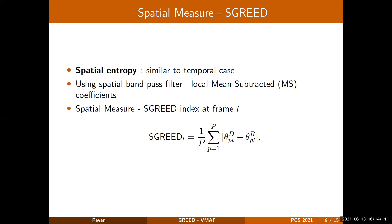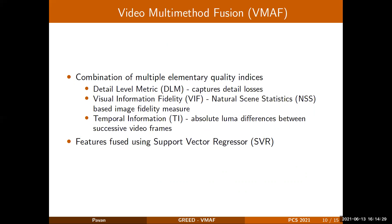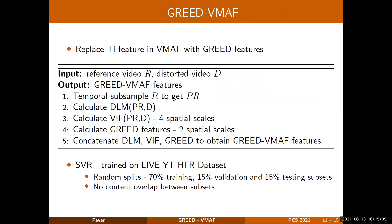Since the spatial bandpass filtering is done at each frame, there is no bias due to frame rate, and spatial GREED is just the absolute difference between the reference and the distorted. This concludes the discussion on GREED. Next, I'll discuss the video multi-method fusion, VMAF. VMAF is a combination of multiple elementary quality indices. It includes a detail level metric which captures detail losses, and visual information fidelity, which measures image fidelity based on natural scene statistics. Since this is a video model, it also has temporal information to capture the temporal component, which is just a luma difference between successive video frames. These features are then fed to a support vector regressor to map video features to quality. The proposed model, which we term as GREED-VMAF, replaces the temporal information feature present in VMAF with GREED features.